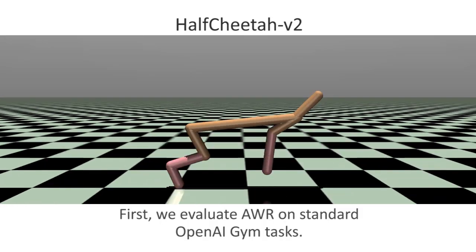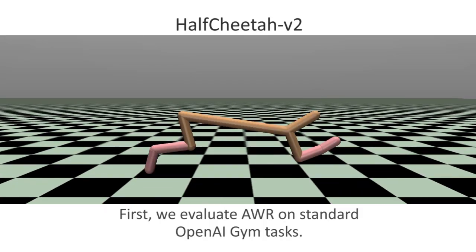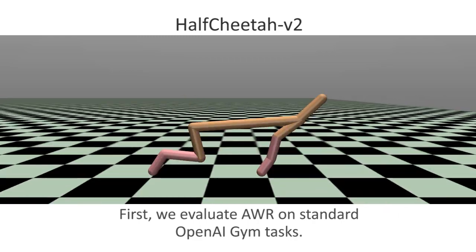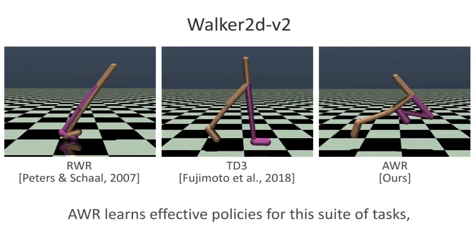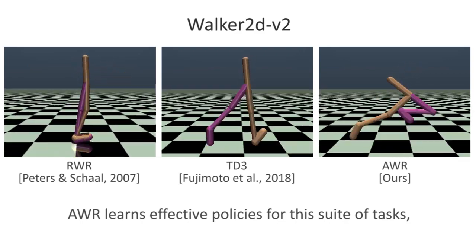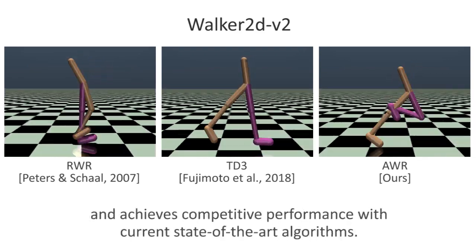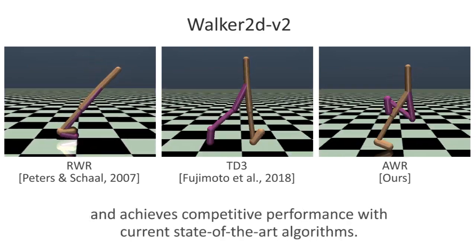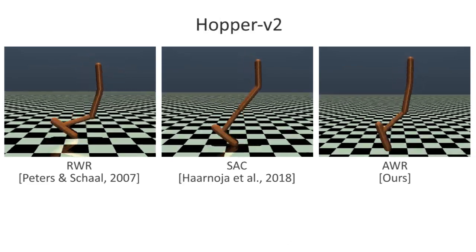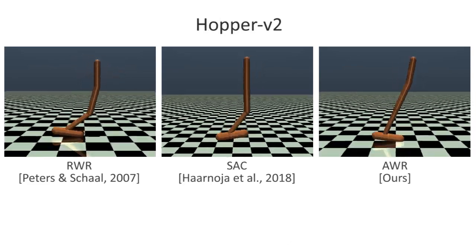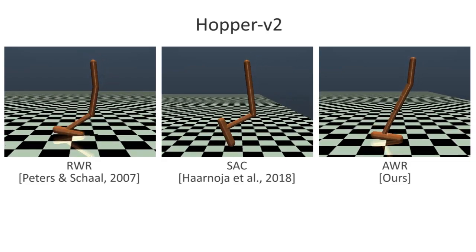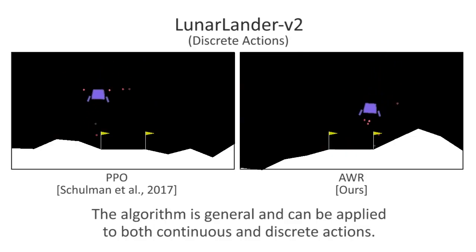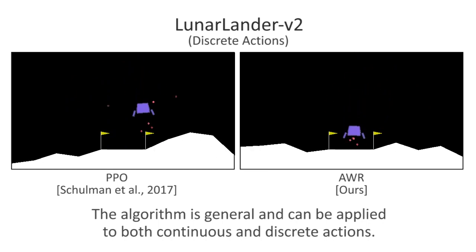First, we evaluate AWR on standard OpenAI Gym tasks. AWR learns effective policies for this suite of tasks and achieves competitive performance with current state-of-the-art algorithms. The algorithm is general and can be applied to both continuous and discrete actions.